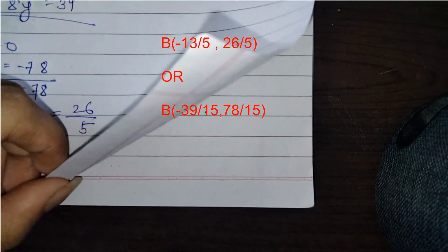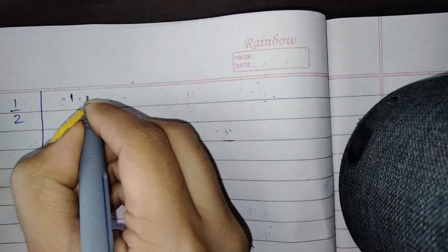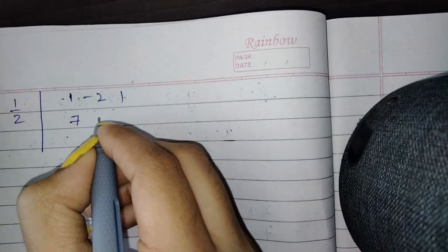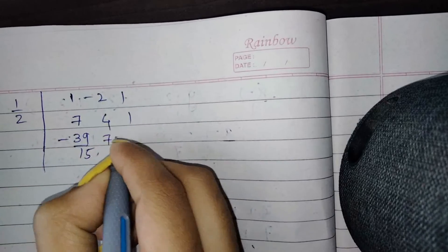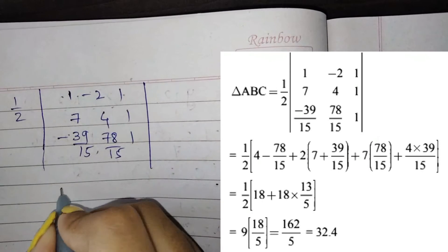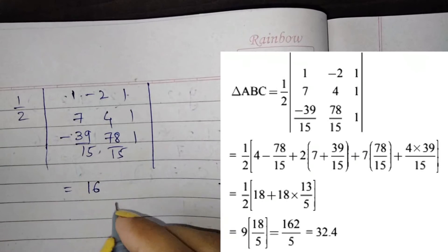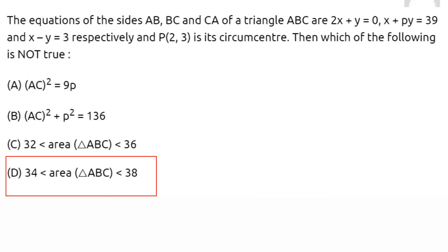Using the determinant method to find the area of triangle ABC with vertices A(1, minus 2), C(7, 4), and B(minus 39/15, 78/15): the area equals half the determinant, giving 162/5 equals 32.4. Therefore the option stating the area is greater than 34 is incorrect, and option D is the correct answer as it does not satisfy the condition.